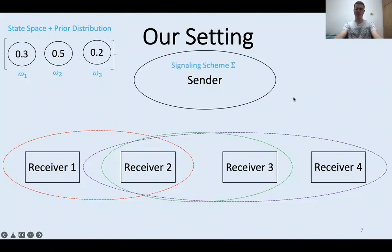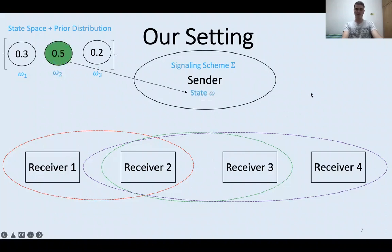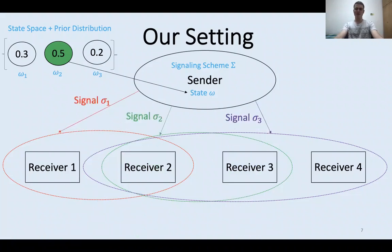The sender should commit to a signaling scheme sigma. The signaling scheme is a randomized function from the space of states to a certain space of signals — in other words, for every possible state, it specifies with which probability to send which combination of signals via the different communication channels. Upon committing to the signaling scheme, the true state is drawn according to the prior distribution and reported to the sender, who then sends the corresponding signals via the communication channels.